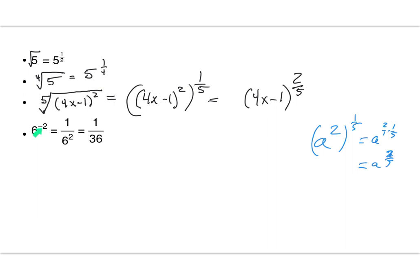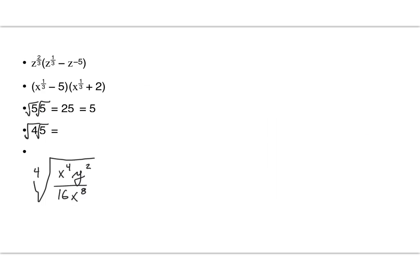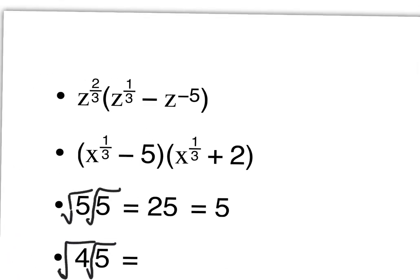The negative power: 6 to the negative 2 is 1 over 6 squared, which is 1 over 36.